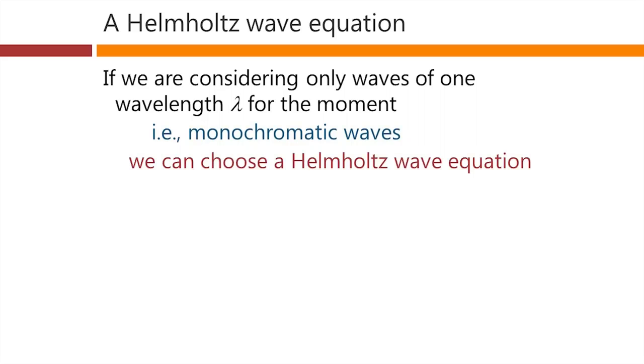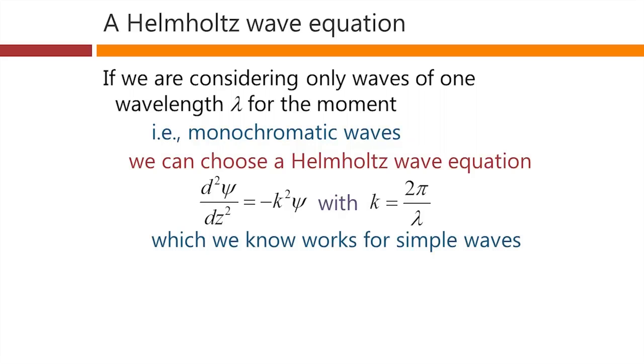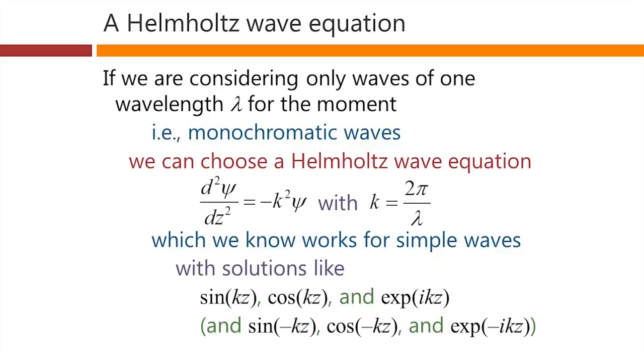And with our Helmholtz wave equation, here's a Helmholtz wave equation that we might choose to write down, where we've got k equals 2 pi over lambda. And we know this works for simple waves. We're hoping it's going to work for our quantum mechanical waves here. And it's got solutions like sine kz, cos kz, e to the i kz, or the same things with minus signs. All of those are solutions of this equation, at least until we put some boundary conditions in.